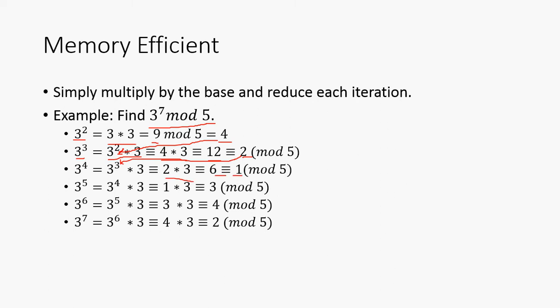We can use this value of 3 cubed in our computation of 3 to the 4th, and we'll see that 2 times 3 is 6, which is 1 mod 5. And then we simply repeat this process with the exponents getting incrementally larger by 1 each time until we get to 3 to the 7th, which is 2 mod 5, and that's our answer.